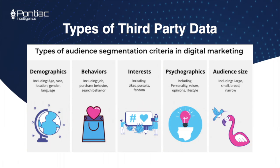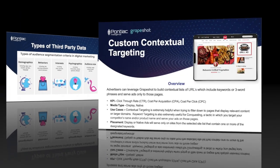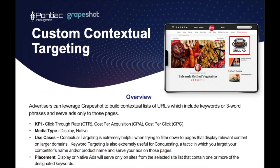Contextual targeting allows you to scan the page that the ads will deliver on for specific keywords. This way, if your keyword appears in that article, we can target that placement with one of your advertisements. Contextual targeting is extremely useful because it doesn't require cookies.